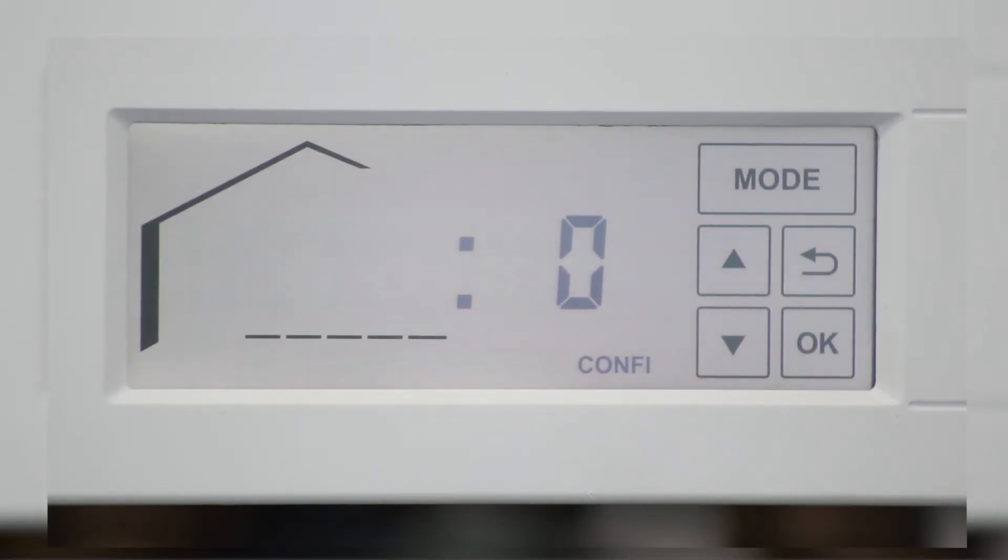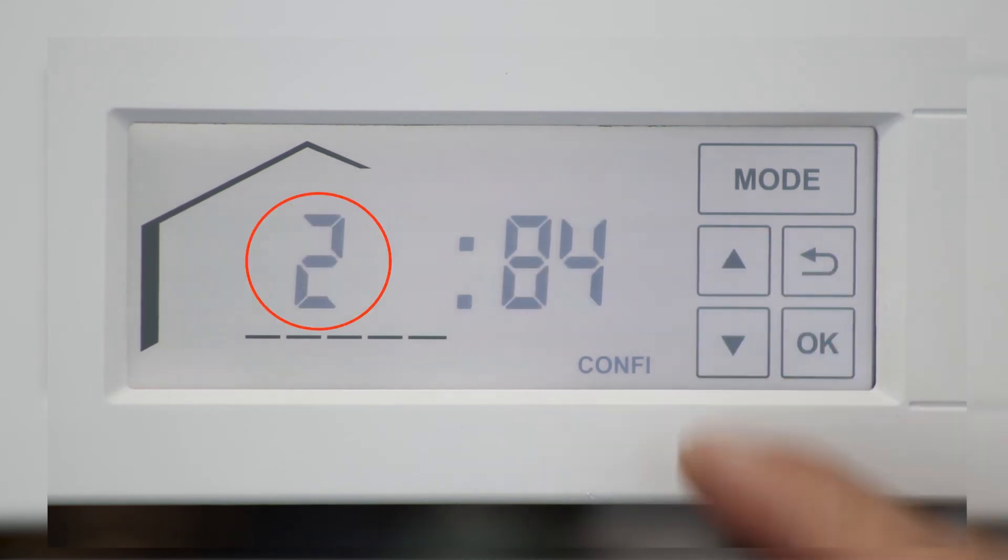The maximum heating output of your boiler can be adjusted according to the system requirements. Once in coding, use the up or down arrows to scroll to address 2. Pressing ok on address 2 allows you to make the necessary adjustments for your system.